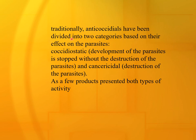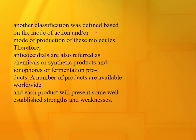Traditionally, anticoccidials have been divided into two categories based on their effect on the parasite: coccidiostatic — development of the parasite is stopped without destruction — and coccidiocidal — destruction of the parasite — with a few products presenting both types of activity. Another classification is based on mode of action or mode of production of the molecule: anticoccidials are referred to as chemical or synthetic products, and ionophores as fermentation products. A number of products are available worldwide, each with well-established strengths and weaknesses.